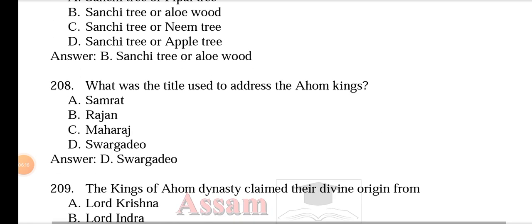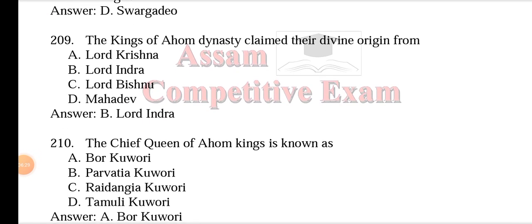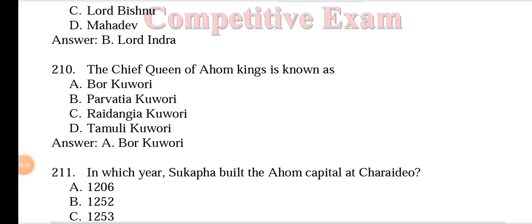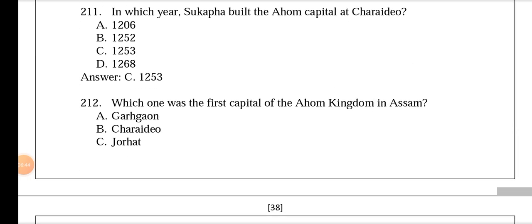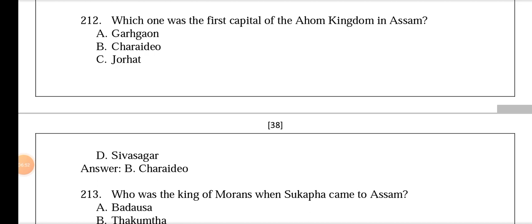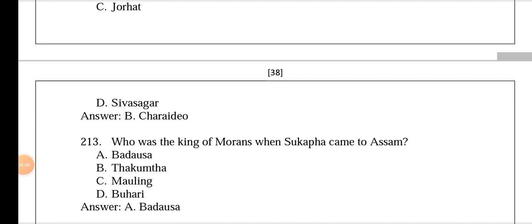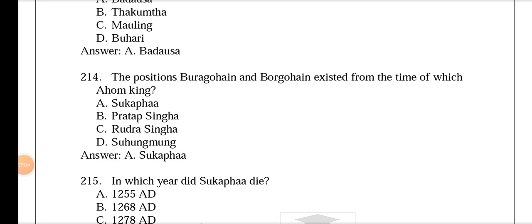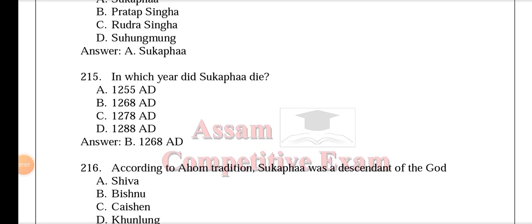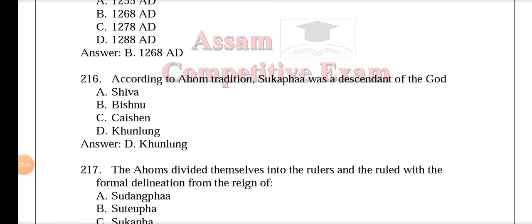The title used to address the Ahom kings was Swargadeo. The kings of the Ahom dynasty claimed divine origin from Lord Indra. The chief queen of Ahom kings is also known as Bork Mori. Sukafa built the Ahom capital at Swargadeo in 1253, and this was the first capital of the Ahom kingdom. The king of the Morans when Sukafa came to Assam was Badosha. The positions of Burago High and Borgo High existed from the time of Sukafa. Sukafa died in 1268.